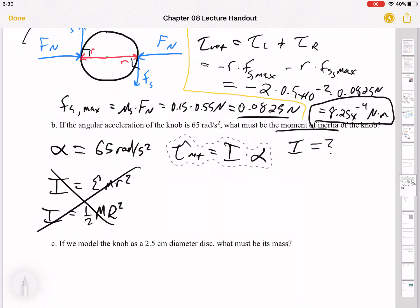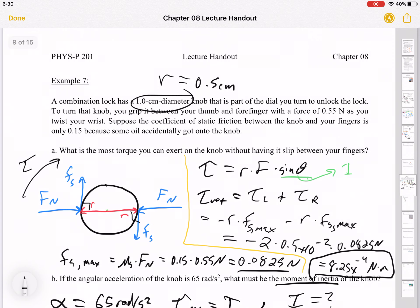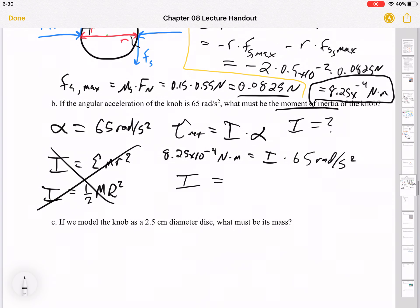So I'm going to move that so I have some more space. Okay, so we said 8.25 times 10 to the minus 4 newton meters equals I times alpha, which is 65 radians per second squared. If you do this math, you get a moment of inertia that is 1.3 times 10 to the minus 5. And the units on that, what are the units on that? Well, it's newton meters divided by second squared. So it's newton meter, actually, times second squared.